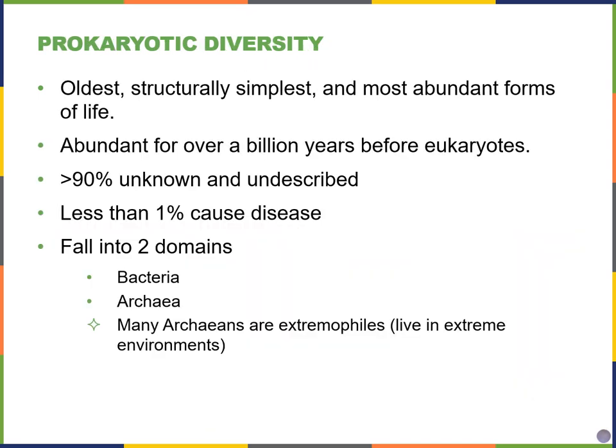Prokaryotes are the oldest type of cells, much older than eukaryotes. They're much more simple in structure than eukaryotic cells, and they're much more abundant. Even on our own human bodies — even though we're eukaryotes — there are many more bacteria and probably archaea on our surface and inside our bodies than we have actual human eukaryotic cells. They were found over a billion years before eukaryotes came about, and there are many more that we have not yet described.